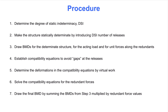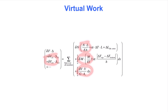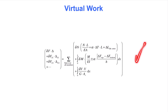However, for truss structures and frames containing truss members, axial deformations must be included. This is why the next slide shows the general formula for virtual work. From the video on virtual work, we know that this formula includes axial deformation, flexural deformation, shear deformation, support settlements, fabrication errors, and temperature changes. Any of these effects can be addressed by the flexibility method simply by including them in the virtual work formula when the delta values are calculated for the compatibility equations.